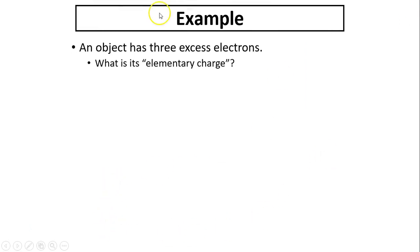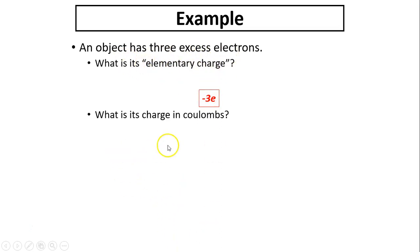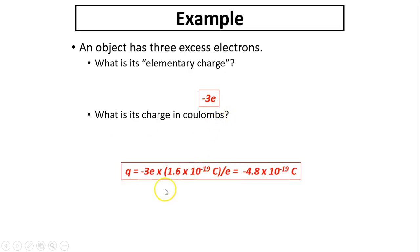Example: an object has 3 excess electrons. The elementary charge is negative 3e. The charge in coulombs is 3 times 1.6×10⁻¹⁹, which gives negative 4.8×10⁻¹⁹ coulombs.